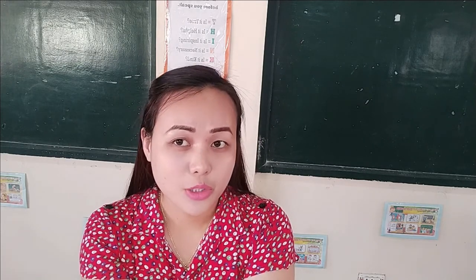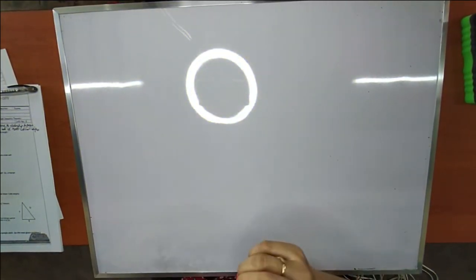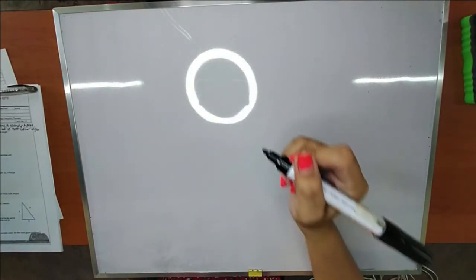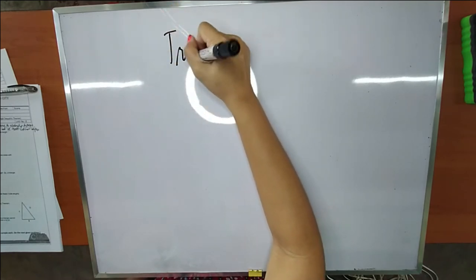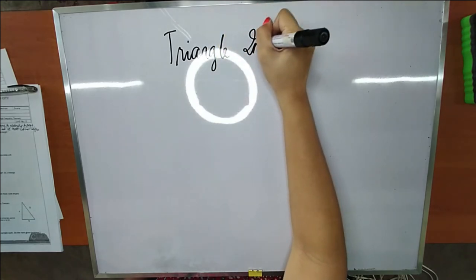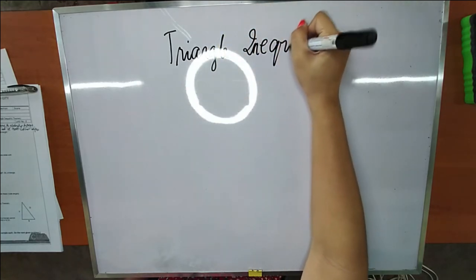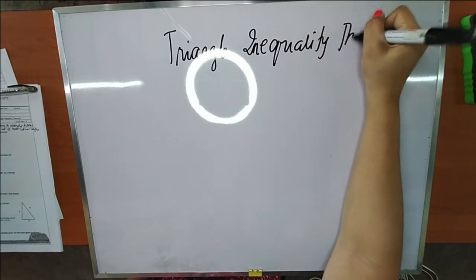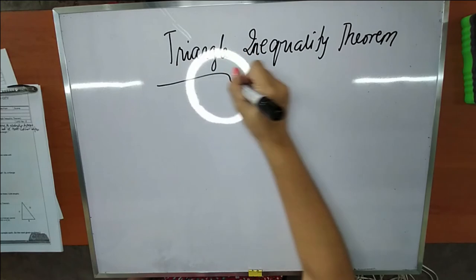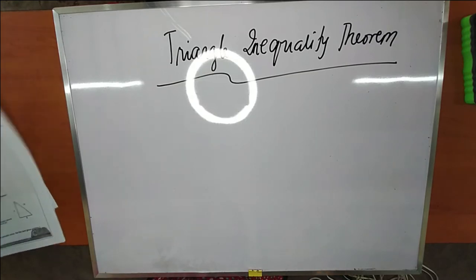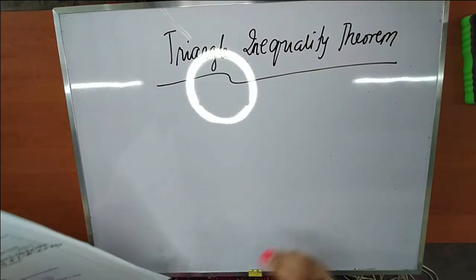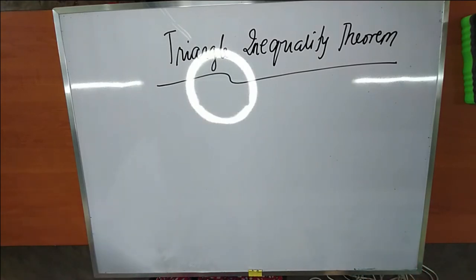To begin with, our next lesson is on triangle inequalities — specifically the triangle inequality theorem. What is the triangle inequality theorem? According to your notes in last number 2, the sum of any two side lengths of a triangle is greater than the third side length.